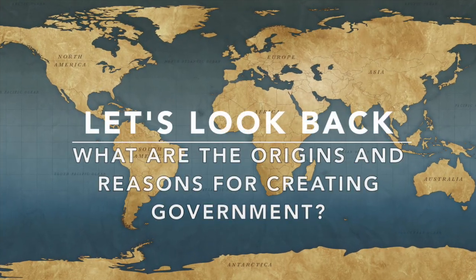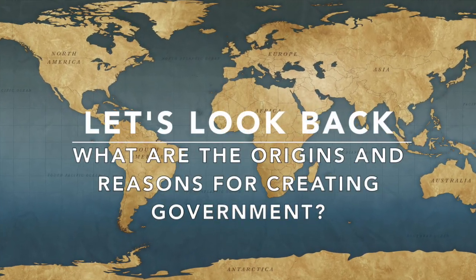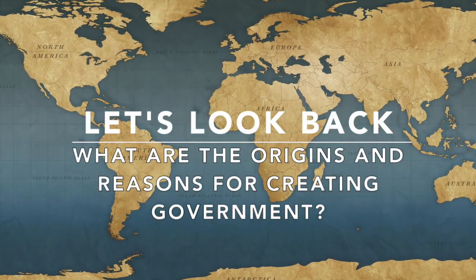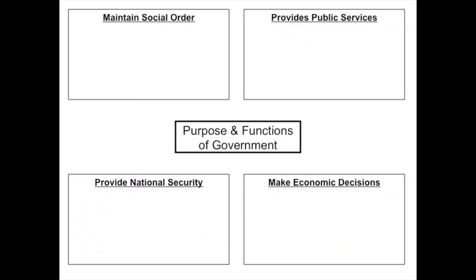Let's take it back and do a refresher at the origins and reasons for creating government. There are four purposes or functions of government to review. One is the government wants to maintain social order. The government is there to provide public services, to provide national security, and the government should be making economic decisions for the nation as a whole.